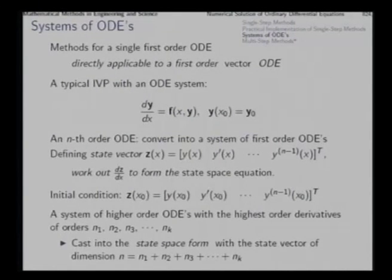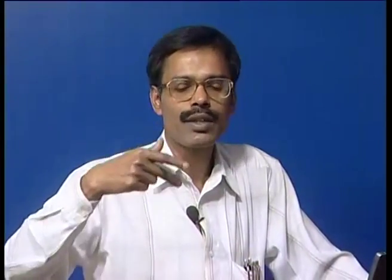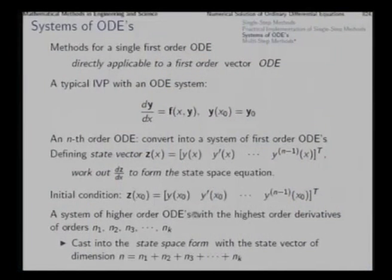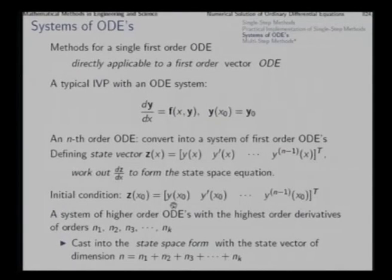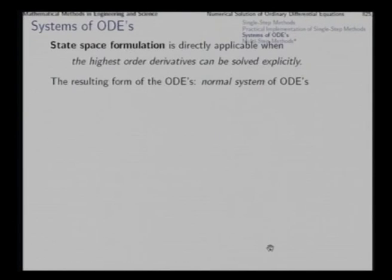In general, if you have a number of ordinary differential equations each of order higher than the first, you can follow the same procedure and break down the entire system into a large number of first-order differential equations. If you have a system of higher-order ODEs with unknown functions y₁, y₂, y₃, y₄, etc. of orders n₁, n₂, n₃, n₄, etc., then you can cast the entire system into state space form with a state vector of dimension n₁ + n₂ + n₃ + n₄ + etc. Let us take an example.